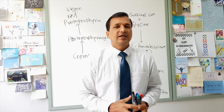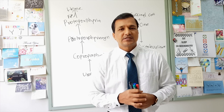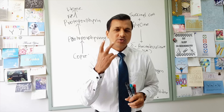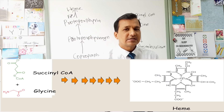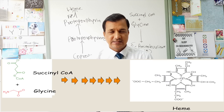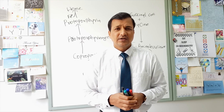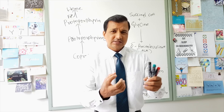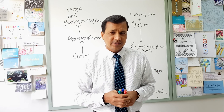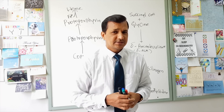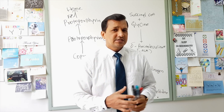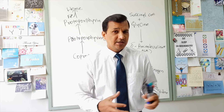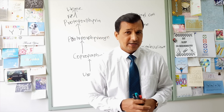The complex heme molecule comes from 2 simple molecules: succinyl CoA and glycine. As you all know, succinyl CoA is a TCA cycle intermediate. Whenever heme synthesis is going on, succinyl CoA is pulled out of the TCA cycle. Since the TCA cycle is in the mitochondrial matrix, the very first reaction in heme synthesis should also be in the mitochondrial matrix.